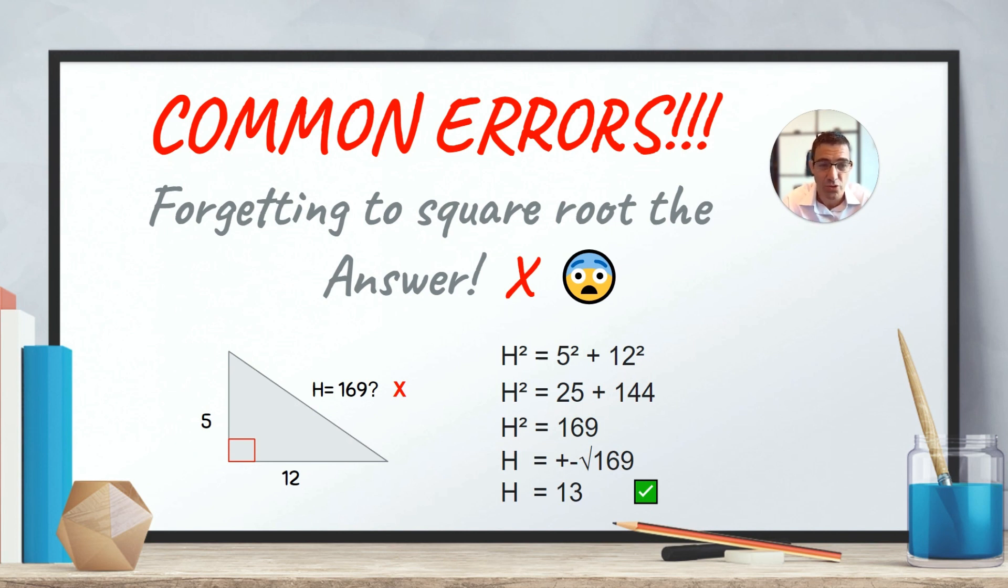And this is where you need to do the square root. Now, when you apply the square root function here, you can say it's plus or minus the square root of 169, because negative 13 times negative 13 is also 169. So there are two solutions to this question. When you get to H squared equal 169, it can actually be positive 169 square rooted or negative 169 square rooted.